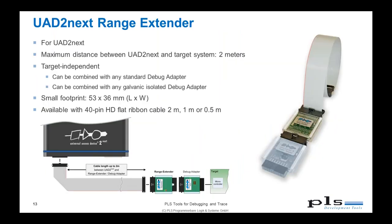For the UAD2 Next we also provide a so-called range extender — a cable and additional adapter that bridges distances up to two meters between the debug box and the target. This is useful for test racks where there is not enough physical space to place the UAD near the target. The range extender can be combined with all standard debug adapters and also with all galvanically isolated debug adapters, making them target-independent.